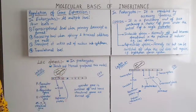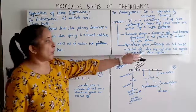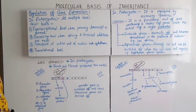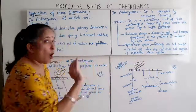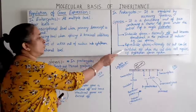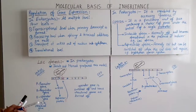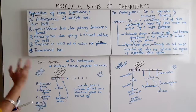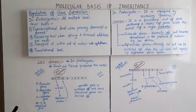A repressible operon is normally in the ON condition but can be switched off when the cell does not require the product. An example is the tryptophan operon. However, this is not in your syllabus — in your syllabus you have the inducible operon, that is the lac operon.